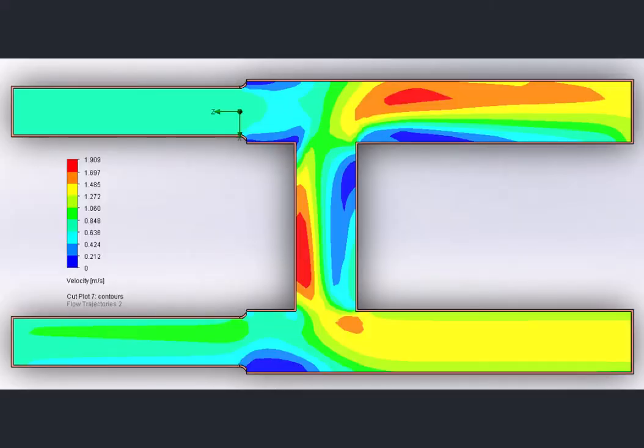So this image shows us the velocity of the water in this close coupled T. Red shows us a high concentration of velocity, meaning the speed of the water, and the blue areas show us a low velocity, all in meters per second.